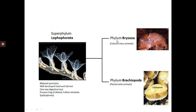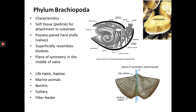We've looked at the first phylum, the bryozoans — the most colonial animals, with a calcareous skeleton. Now look at Phylum Brachiopoda. These are lophophorates with paired valves — 'valves' means shells — so they have two shells. Superficially they resemble oysters and clams or bivalves, but these are very different animals, more closely related to the brachiopods. So let's look at the basic body plan for brachiopods.